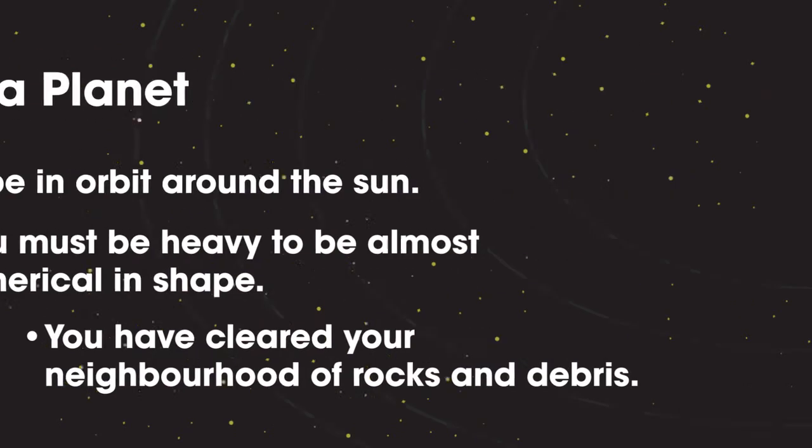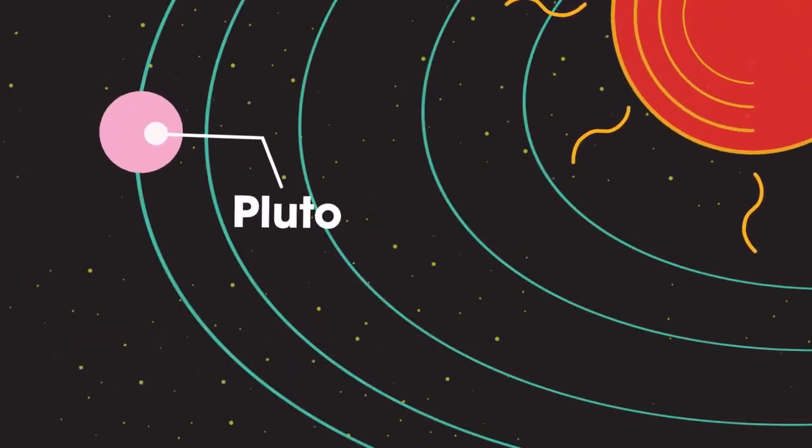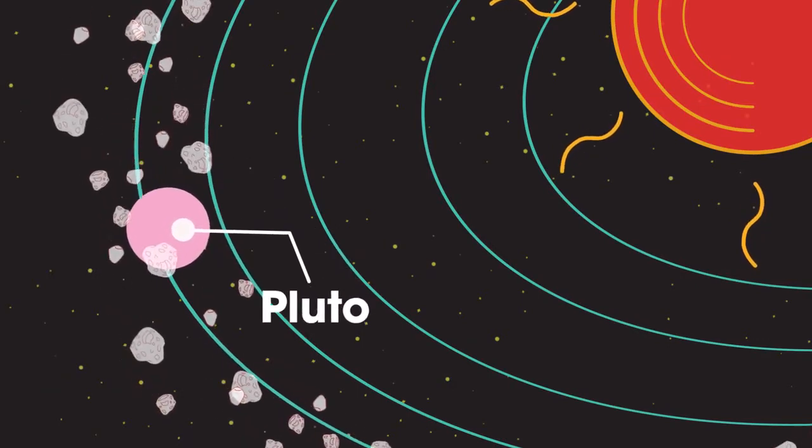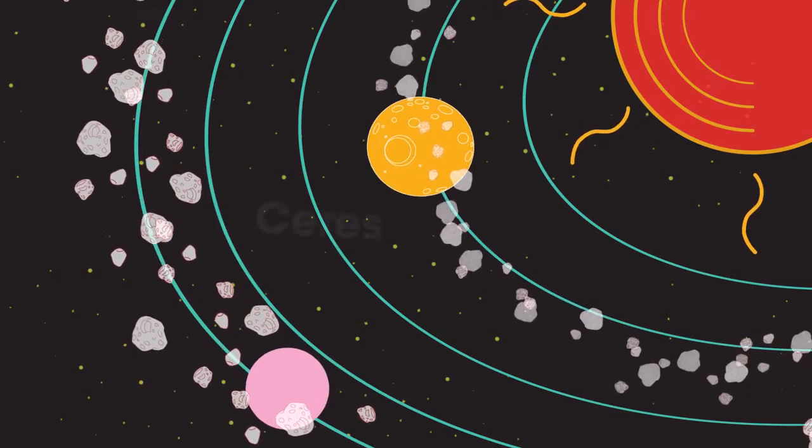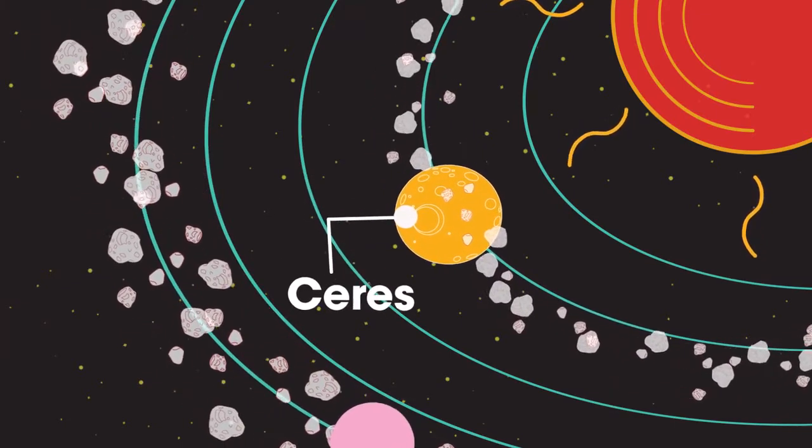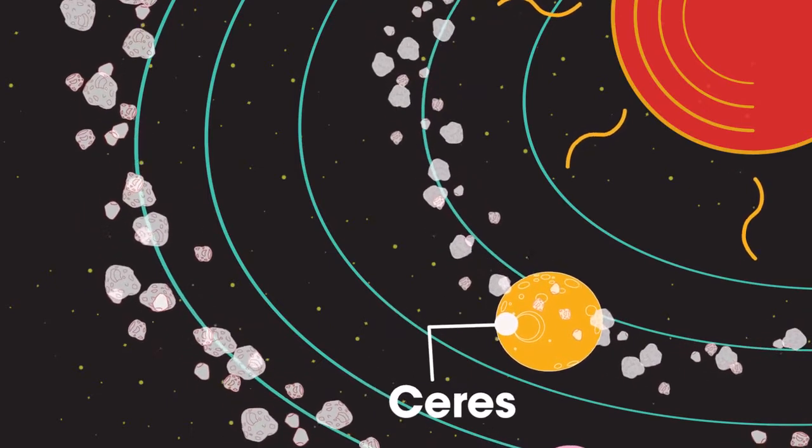Pluto joined other named dwarf planets, which are bodies that orbit a star and have a stable shape, but have not cleared their orbit of other debris. The large asteroid Ceres is another example of a dwarf planet, and others well beyond Pluto are being discovered.